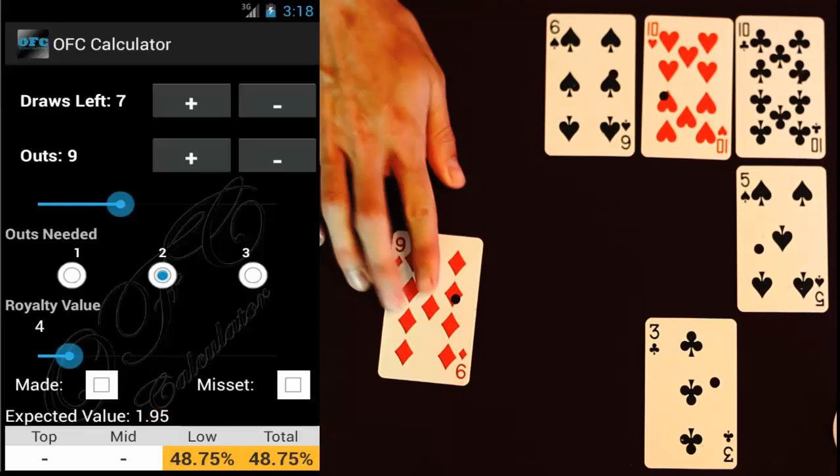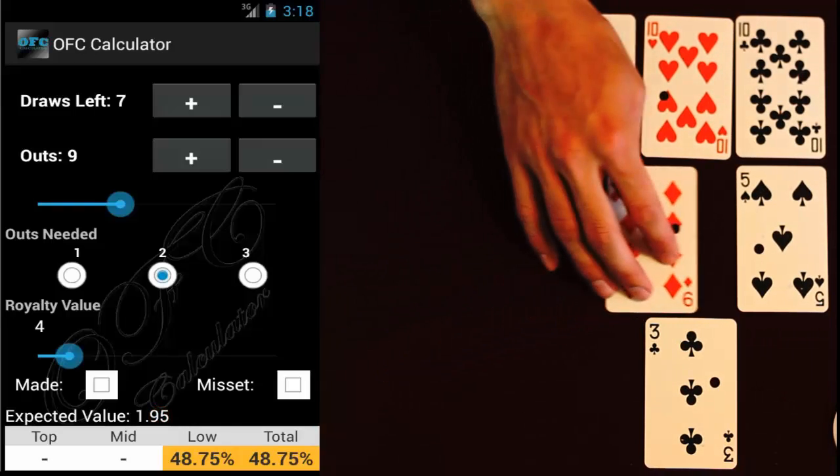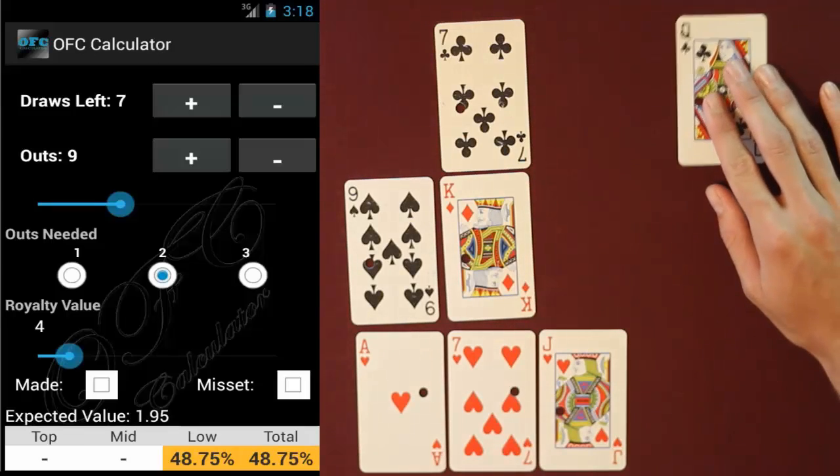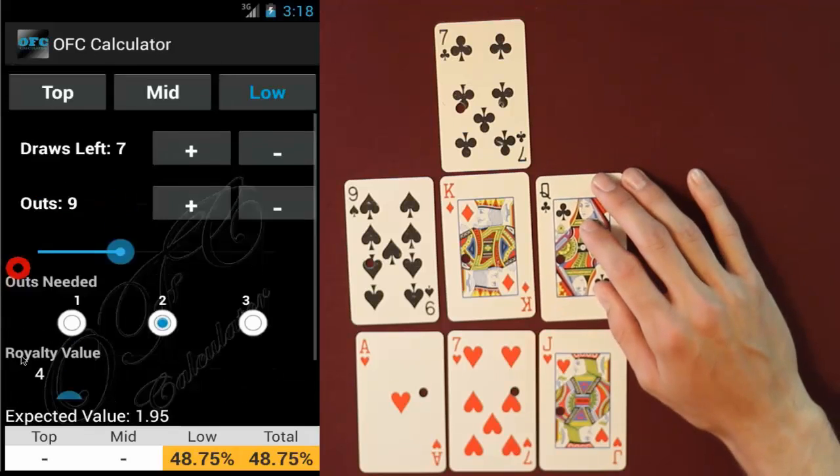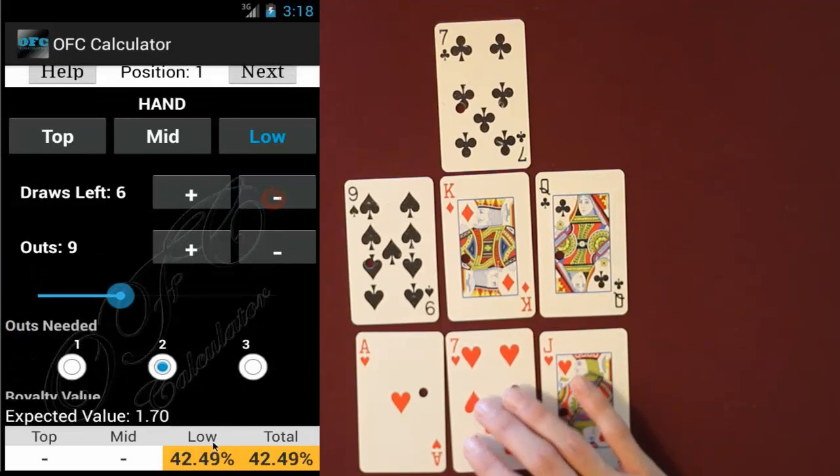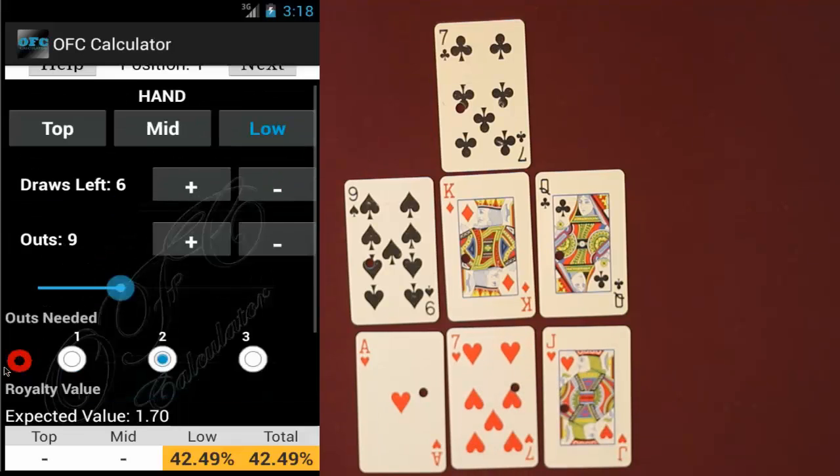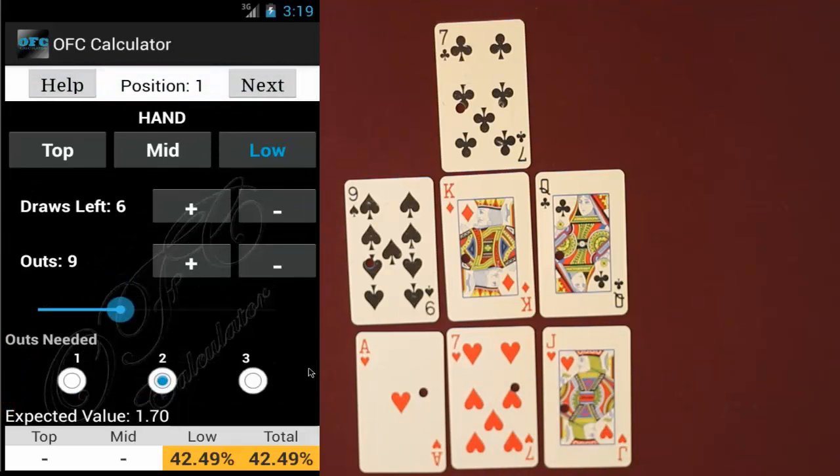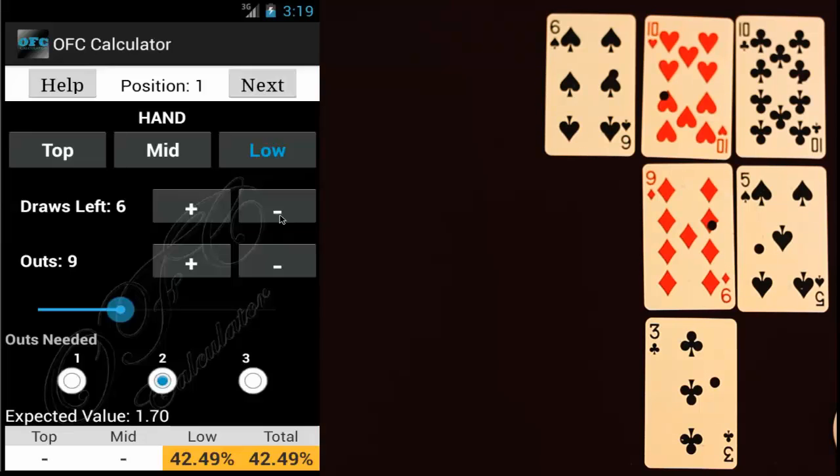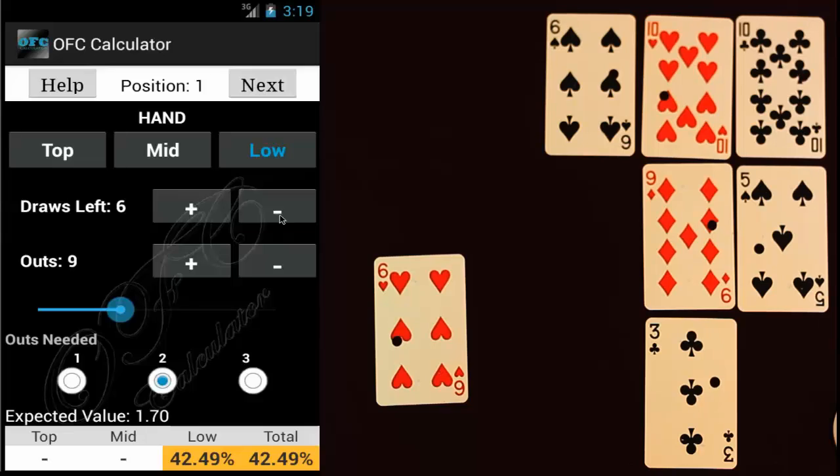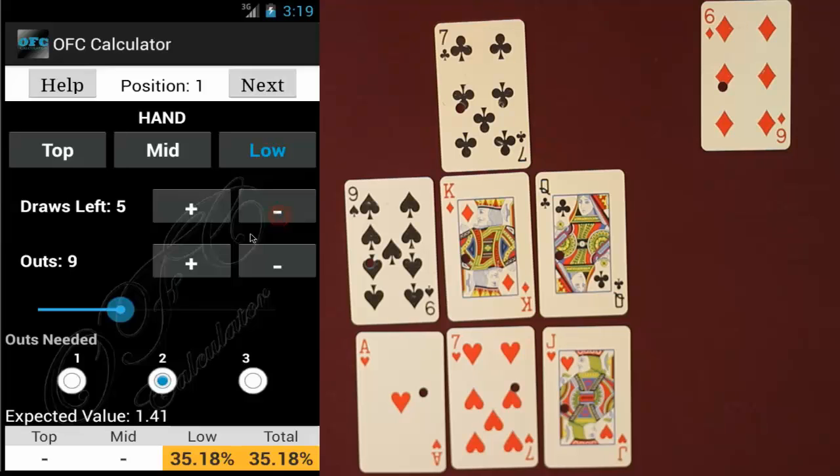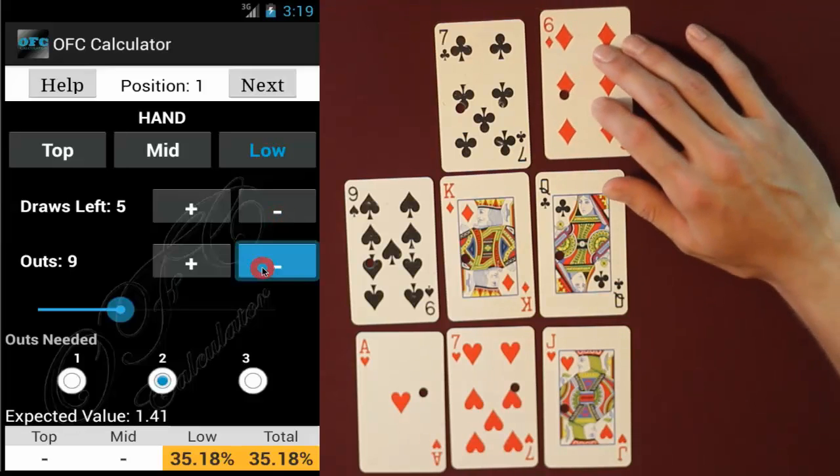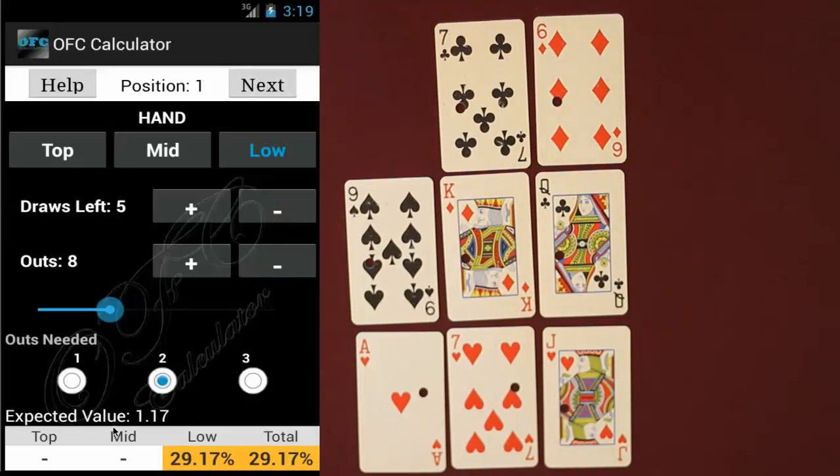Our opponent draws the nine of diamonds and we then draw the queen of clubs and put it in the middle. So again the first thing we're going to do is decrease the number of draws by one. Nothing else has really changed. I don't really want to incorporate the middle hand yet so we're just going to go on to the next draw. Our opponent draws the six of hearts and we draw the six of diamonds. So again decrease our draws by one and our outs is decreased by one because they drew a heart.